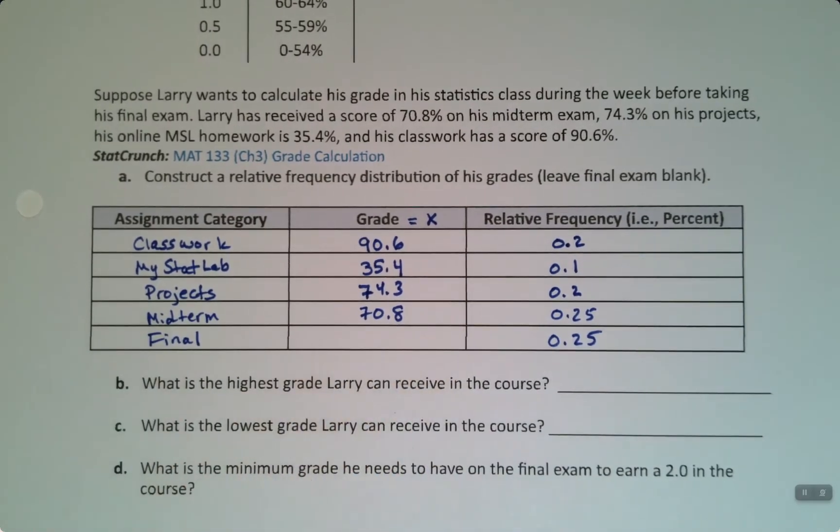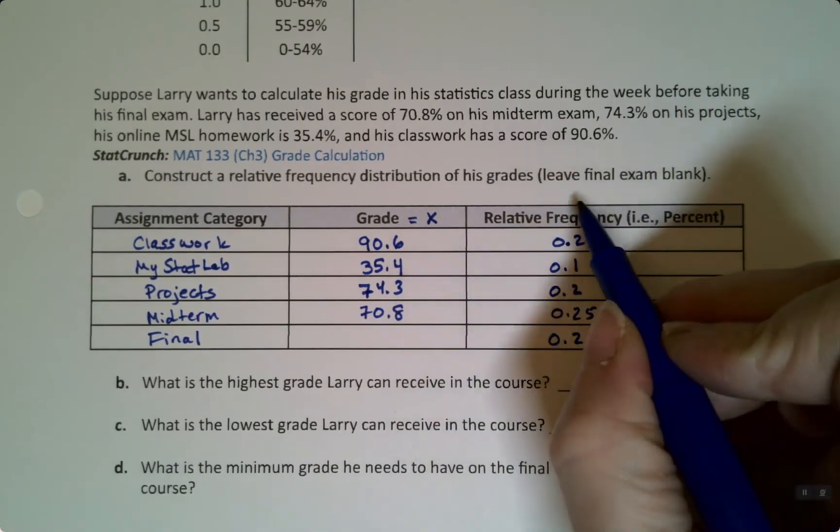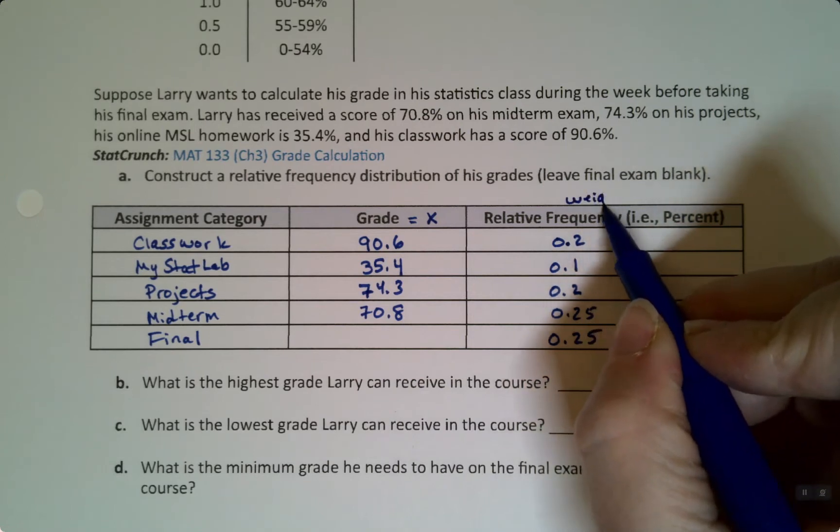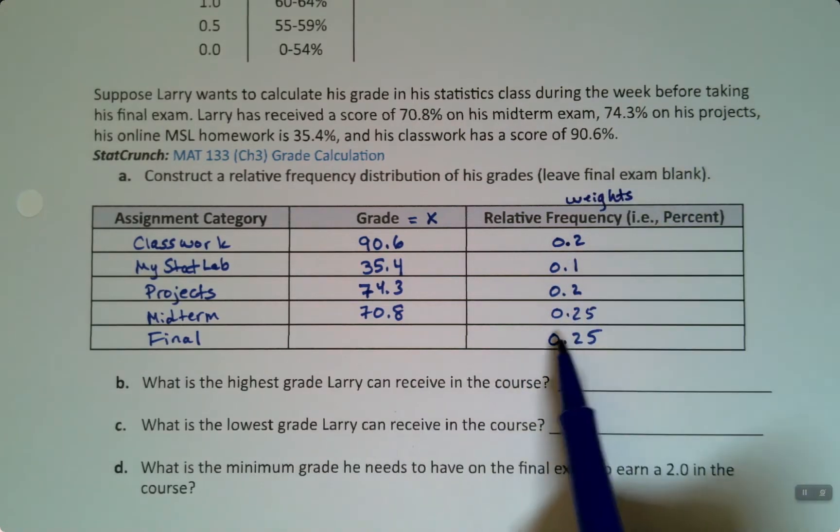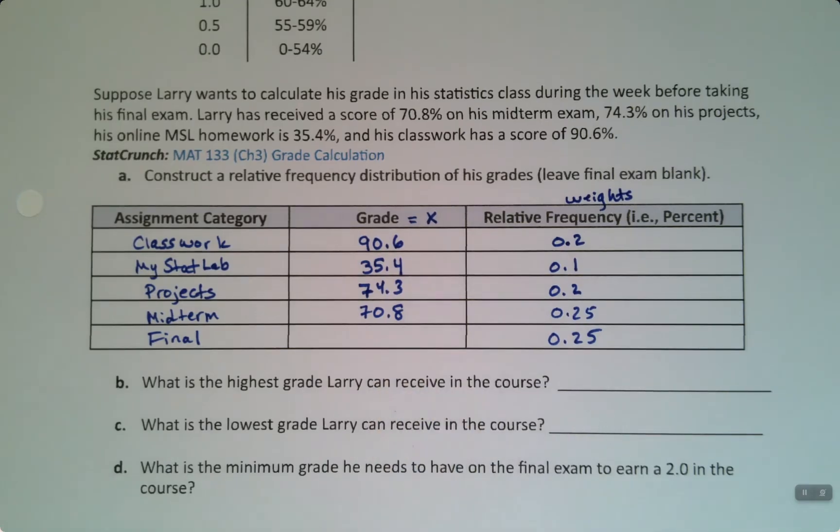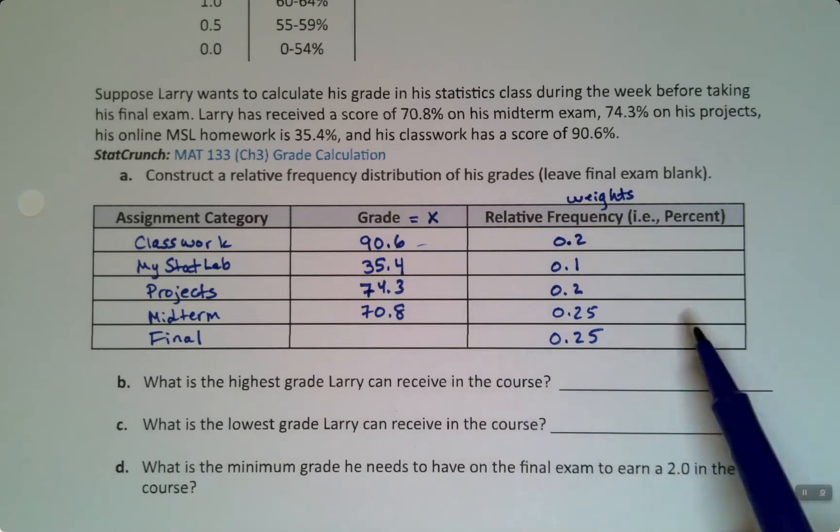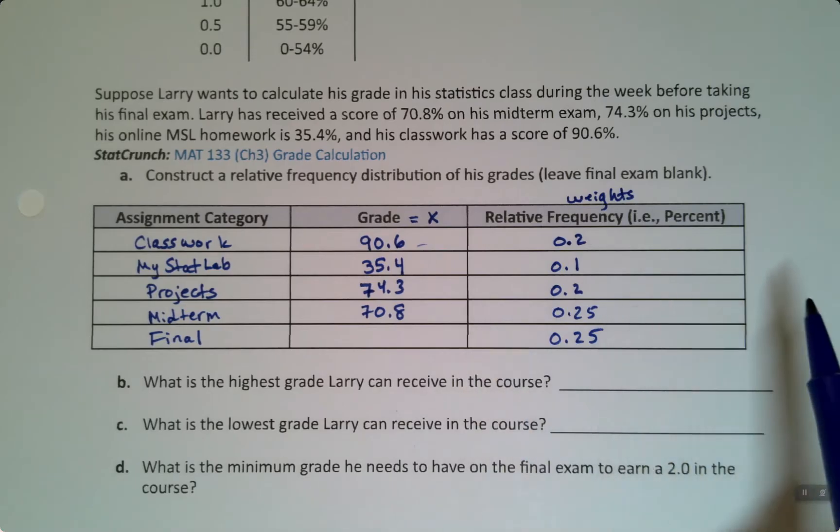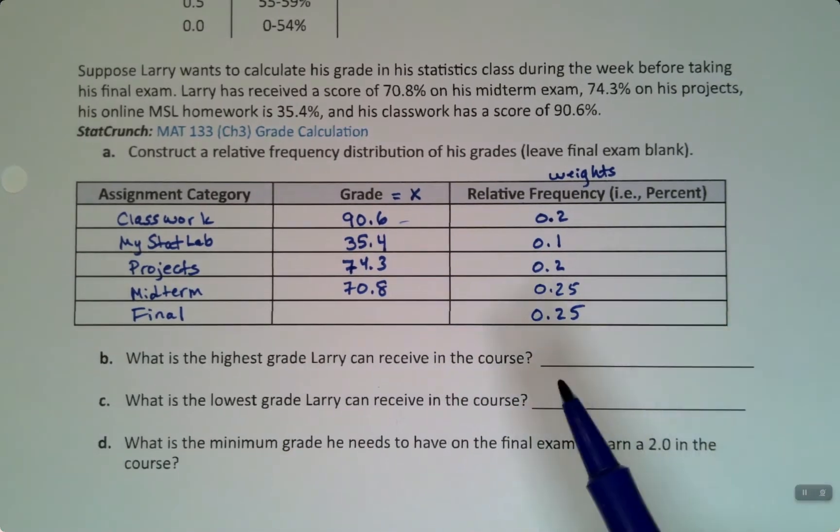The question becomes, what's the highest grade Larry can receive in this class? Keep in mind, these are your x values, these are your weights, the relative frequency for each of those categories. We could mess around with doing this by hand, but it would be tedious because everything's with decimals everywhere. So we're going to use StatCrunch to help us.